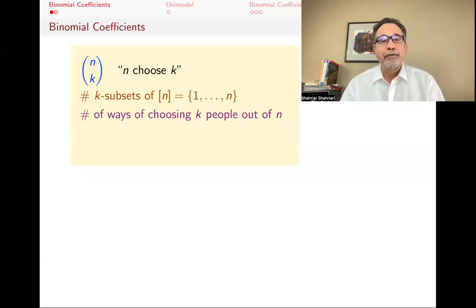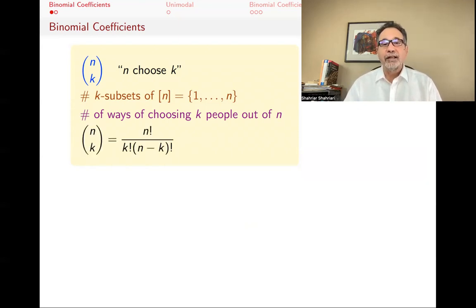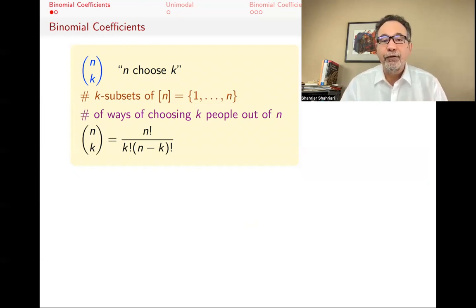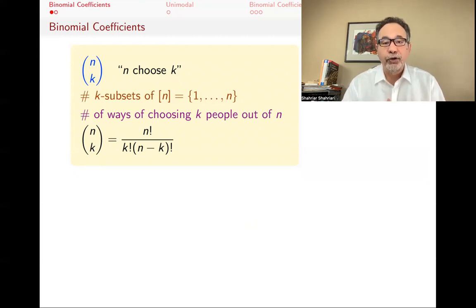That's the same as saying: if you have n people sitting in a room, how many ways can you make a committee of size k out of them? That number is n choose k. In previous videos we've had a number of videos on binomial coefficients. We found a formula: n factorial divided by k factorial times n minus k factorial. These numbers are called binomial coefficients.